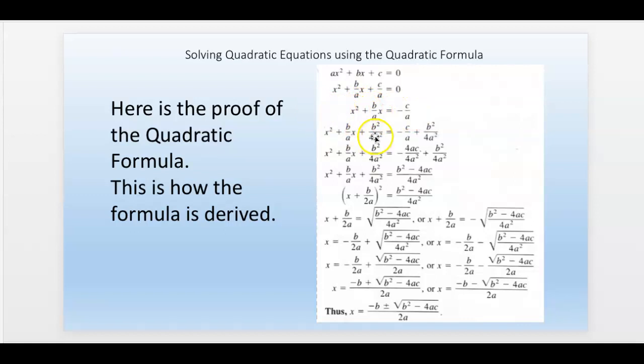So here we complete the square by adding it to both sides: b squared over 4a squared. We add that to both sides. Over on this side, they're getting a common denominator, 4a squared, so they can put it into one fraction. Over here, they're not doing anything at all on the left side until right here. We completed the square, so now we can write it as a perfect square. This is the perfect square right here, and this is the fraction we have on the other side.